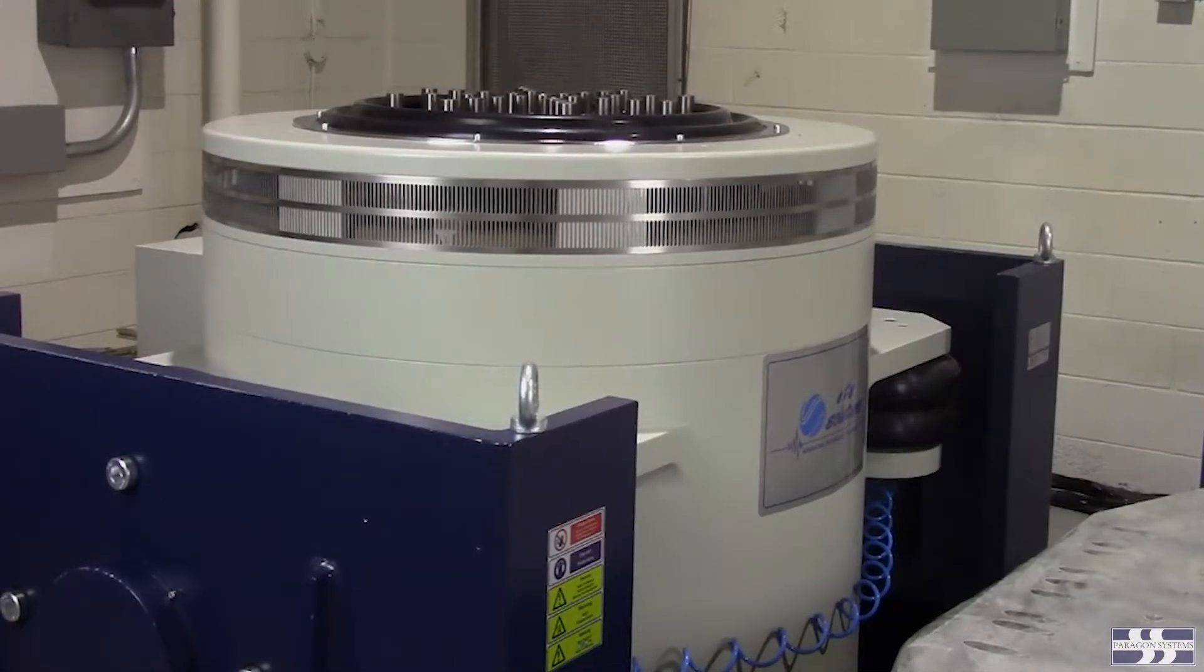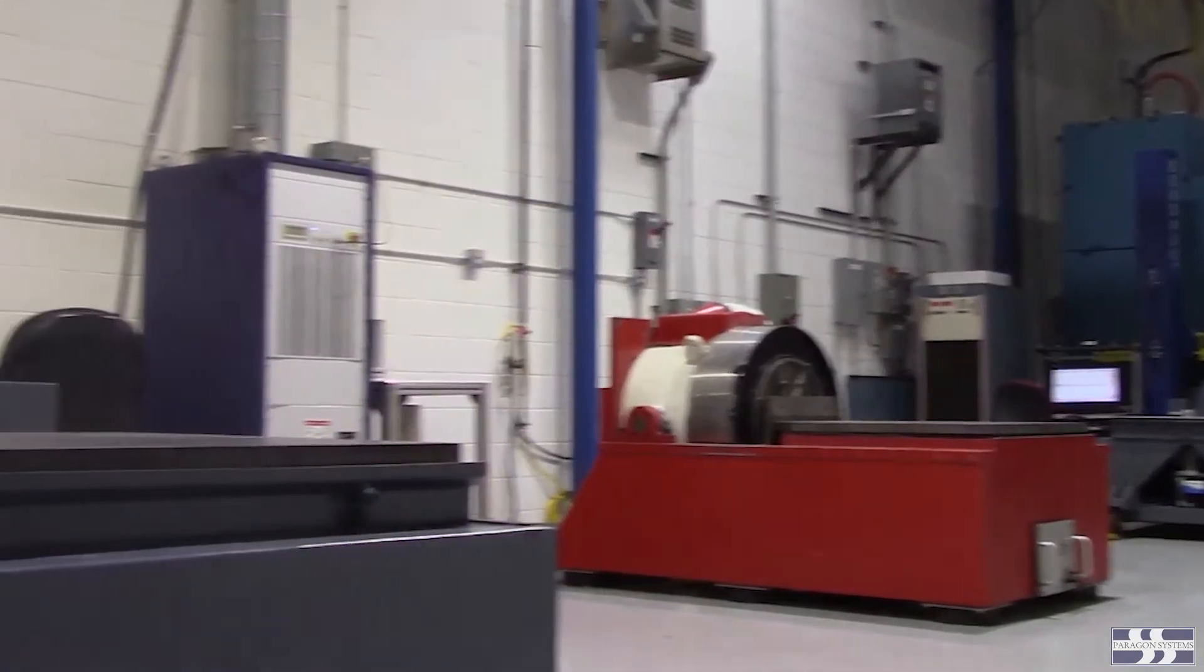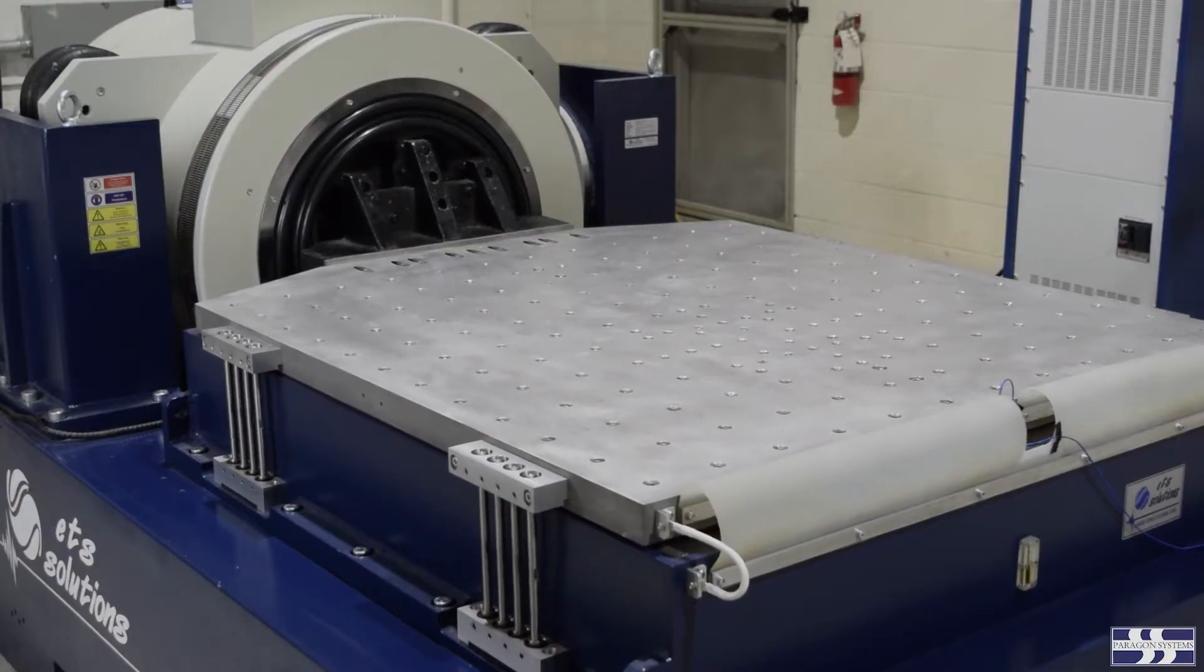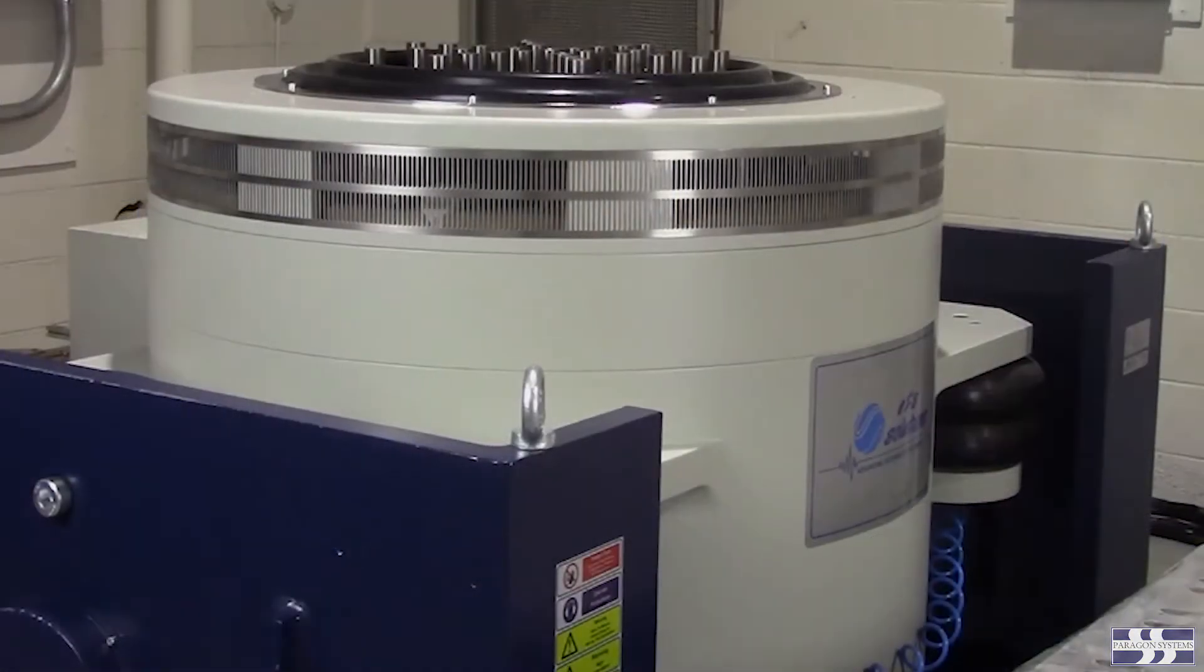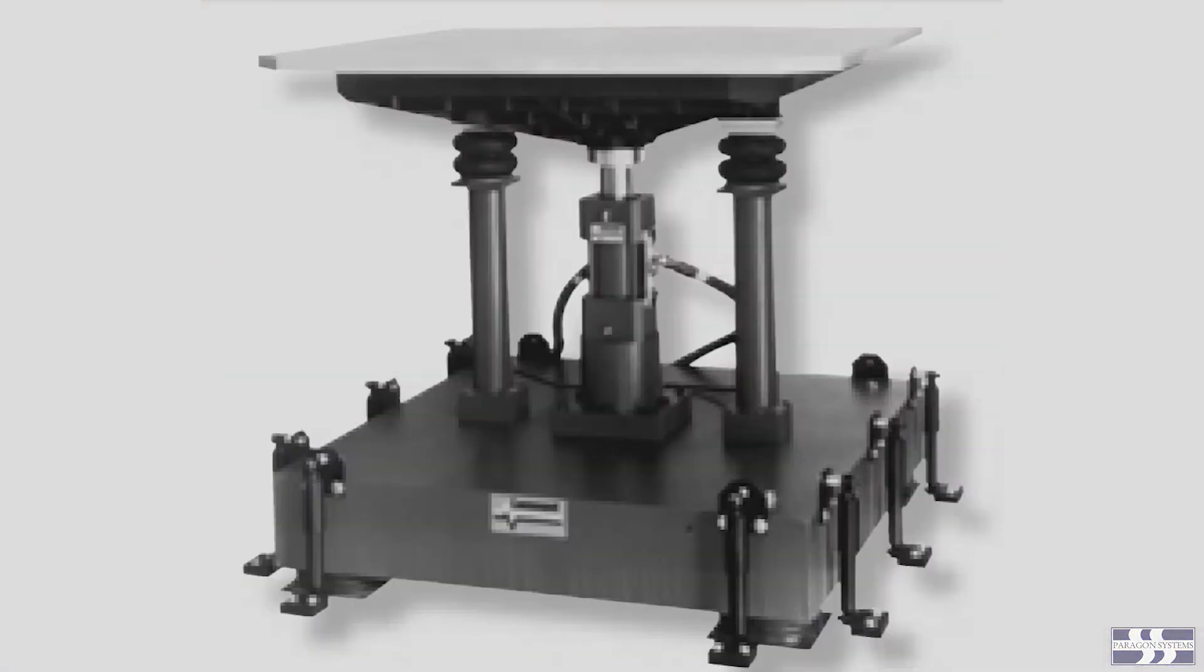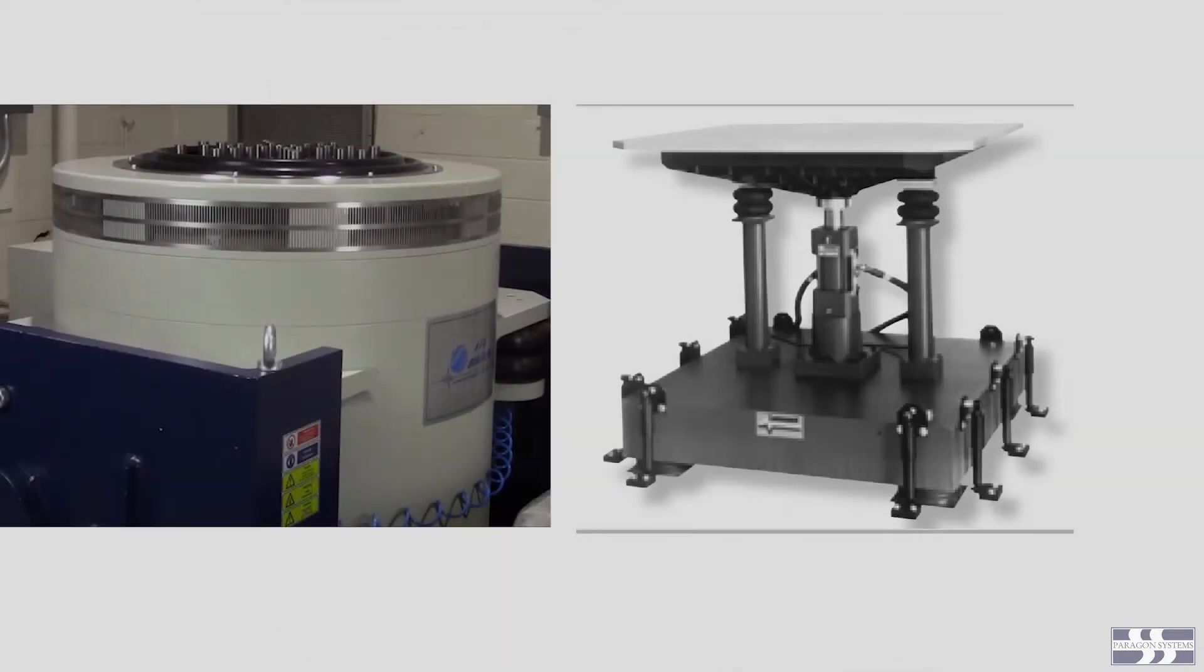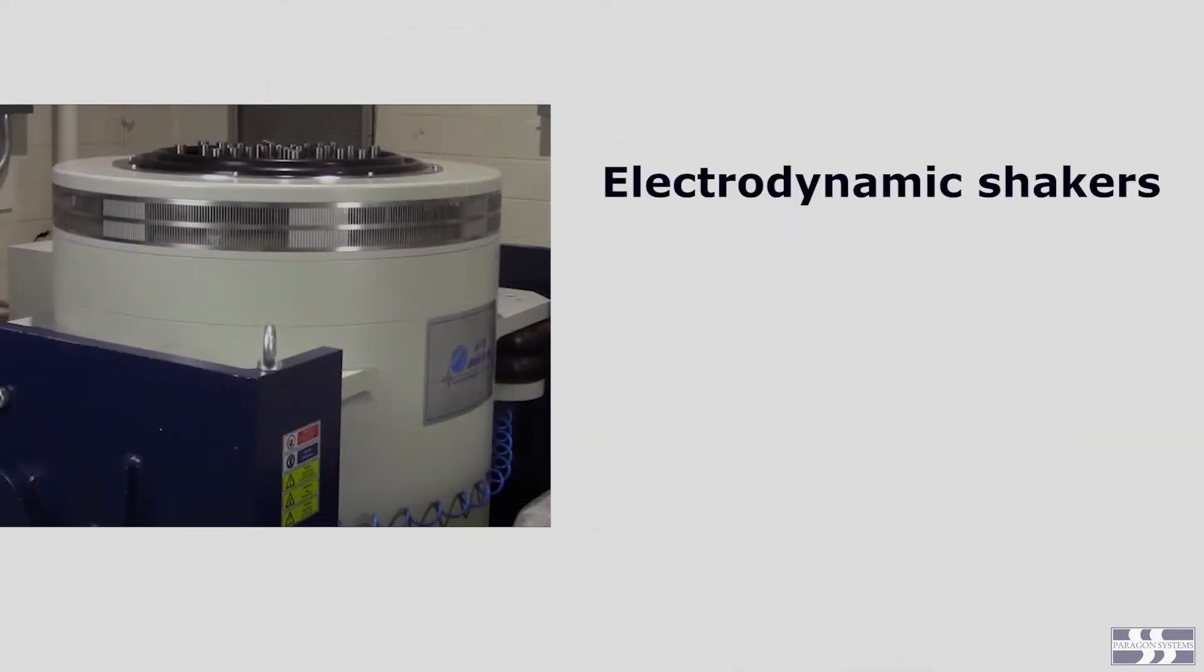In order to vibration test your sample or device, we require a source of vibratory energy. Vibration labs use two principal types of machines to provide this energy: electrodynamic or electrohydraulic shakers. Each type of shaker has its advantages.